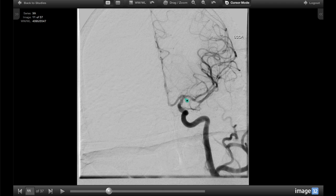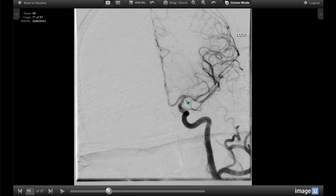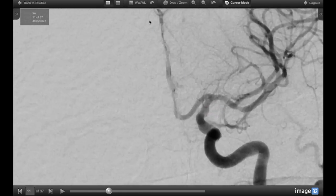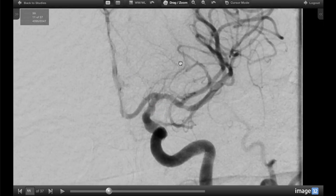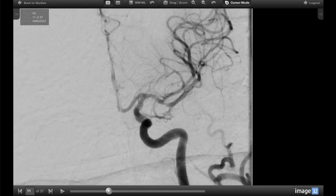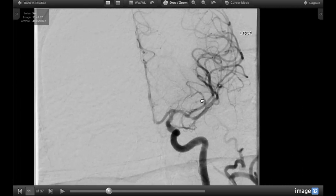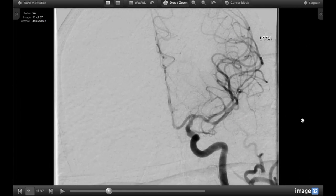If we zoom in, we see the top of the carotid, this T-configuration, and we see that the blood flow is normal because the clot has been pulled out from that location where it had blocked the top of the carotid.